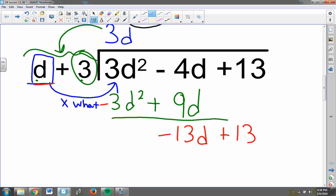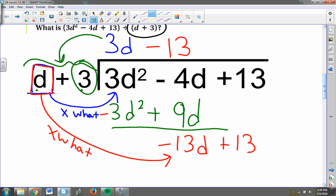So now I ask the question, how many times does d go into this term? Or d times what will get me to negative 13d? And the answer is minus 13, negative 13. So now that I have the second term of my quotient, I'm going to take the negative 13 and multiply that by d plus 3. So negative 13 times d is negative 13d, and then negative 13 times 3 is negative 39.